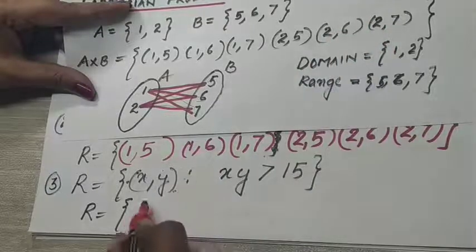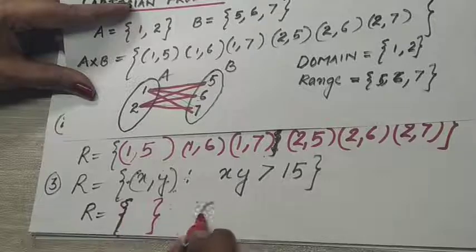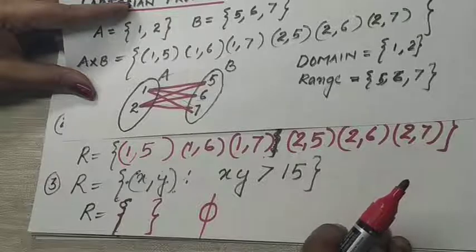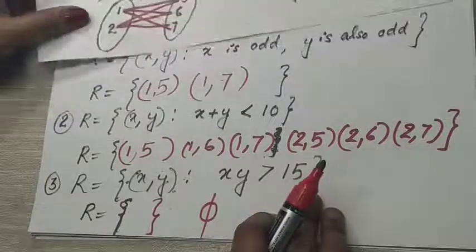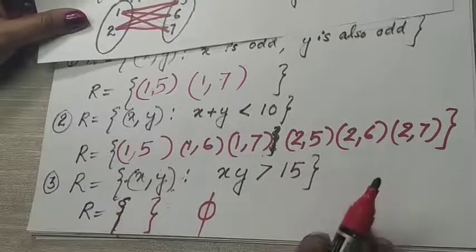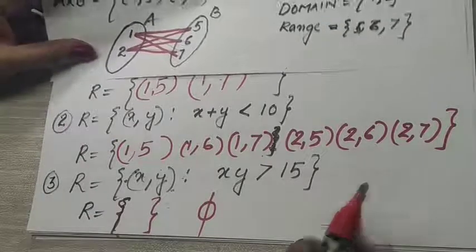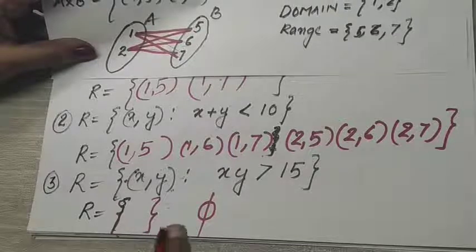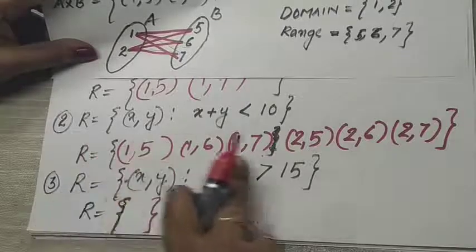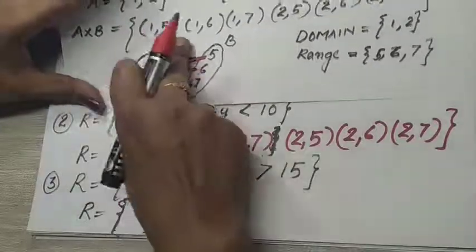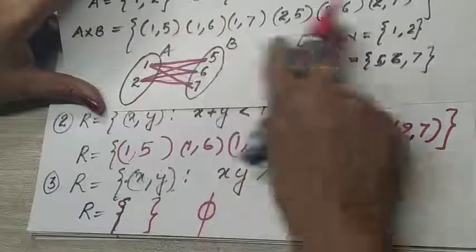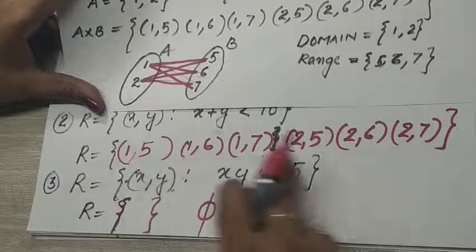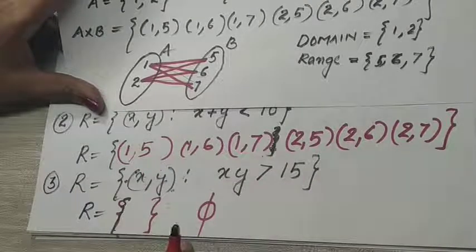In another example, if the sum exceeds the limit (like 7+7=14 which is not less than 15), we are not getting any element — that gives a null set. This relation we call an empty relation. And if all coordinates from the Cartesian product come into the relation, we call it a universal relation.